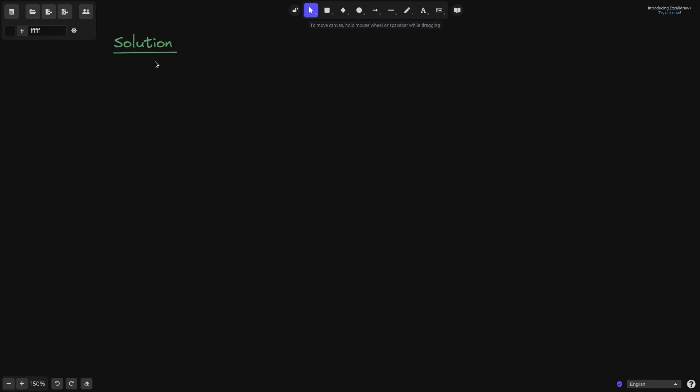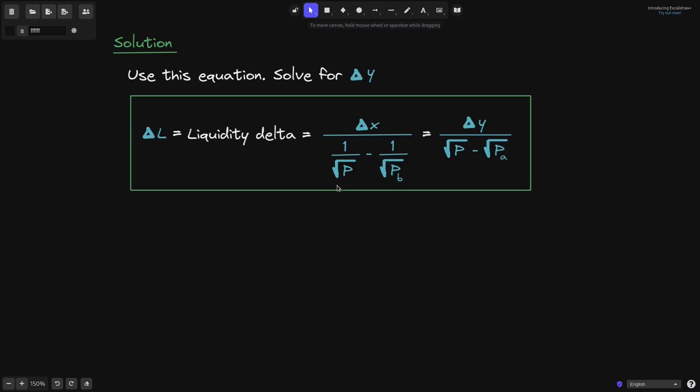Let's go over the solution. How do we compute delta Y? To solve for delta Y, we'll be using this equation, the equation for liquidity delta that we found out in a previous video. We'll be plugging in all of the variables that we know: delta X, current price P, P_B, and P_A. When we put in all of these variables, we'll be able to calculate delta Y.